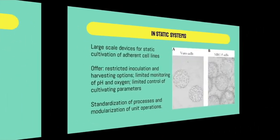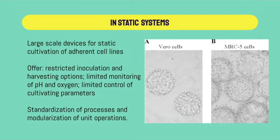There is also the option of static systems, which are large-scale devices for static cultivation of adherent cell lines. They offer restricted inoculation and harvesting options, limited monitoring of pH and oxygen, and limited control of cultivating parameters. What can be done is standardization of processes and modularization of unit operations. An example would be viral vaccines produced in MRC cells and influenza vaccines produced in Vero cells.